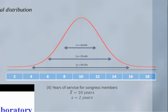The nice thing about normal distribution is we can use it to calculate probabilities, percentages, percentiles, and quartiles. Let's take the example of years of service for Congress members. The average years of service is about 10 with a standard deviation of 2 years. Most Congress people spend roughly 10 years in Congress. Some spend a little more — maybe 12, 14, or 15 years — and when you get way out to the tail at 18, 19, or 20 years, fewer Congress people spend that amount of time.